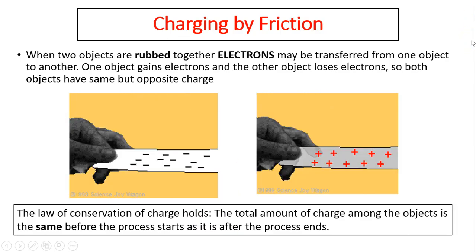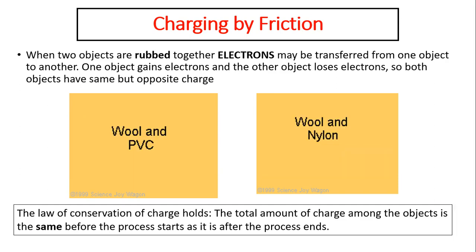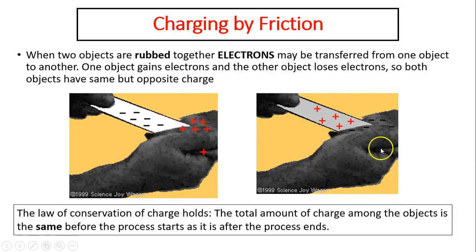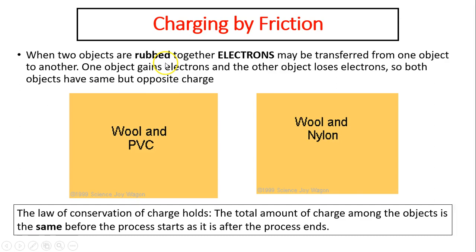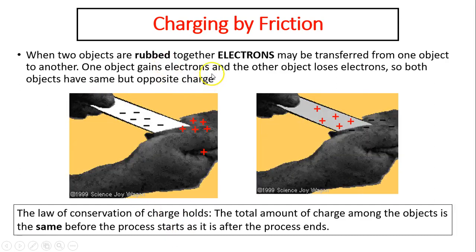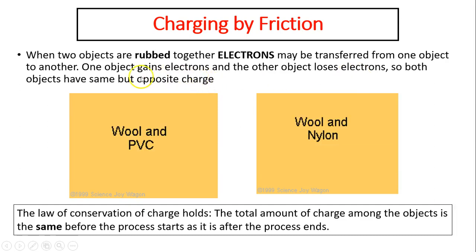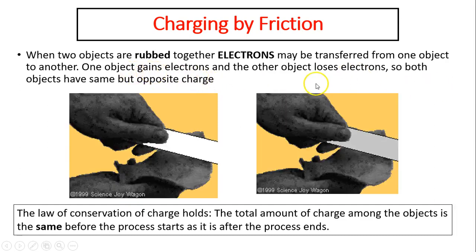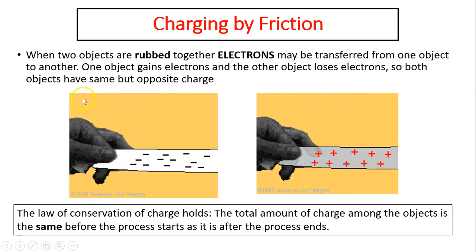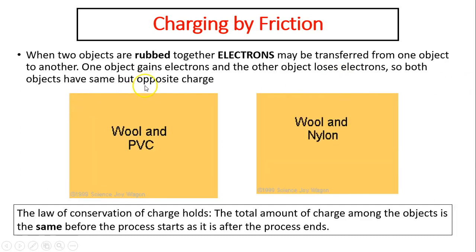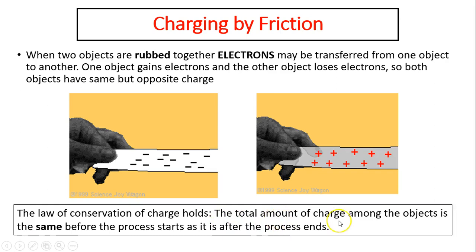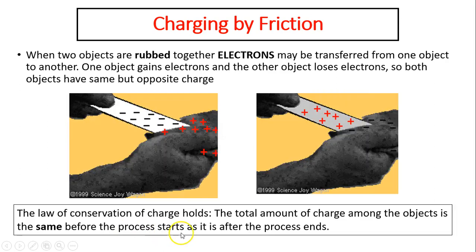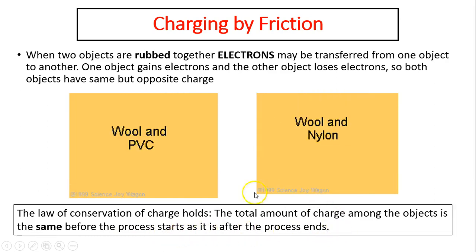Charging by friction: when two objects are rubbed together, electrons may be transferred from one object to another. Not only touching — you have to rub together. This is called charging by friction. One object can gain electrons, the other one loses electrons. If one object gains five electrons, the other one has to lose five electrons, so both would have the same charge but opposite. In this process, the law of conservation of charge still holds — the total amount of charge is the same before the process of rubbing together as it is after.